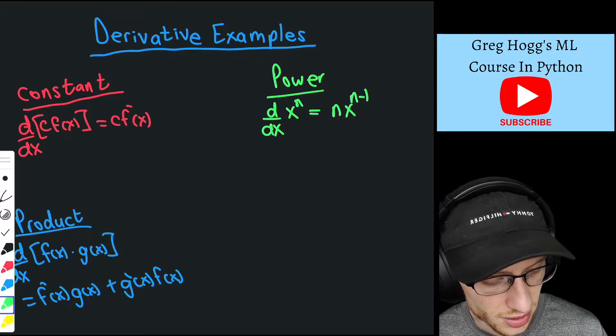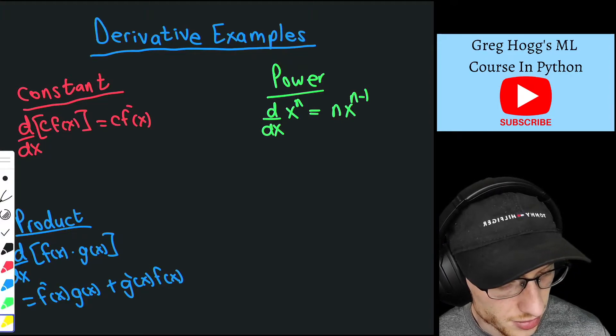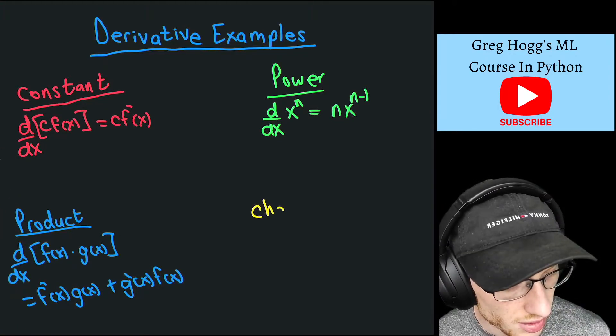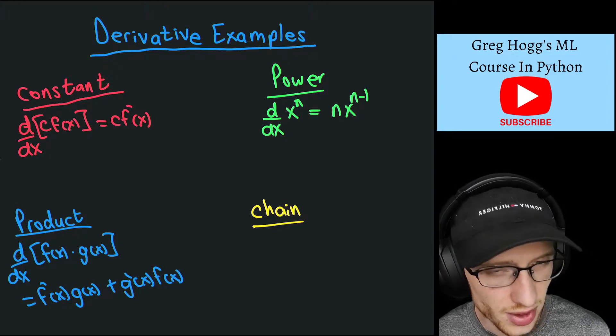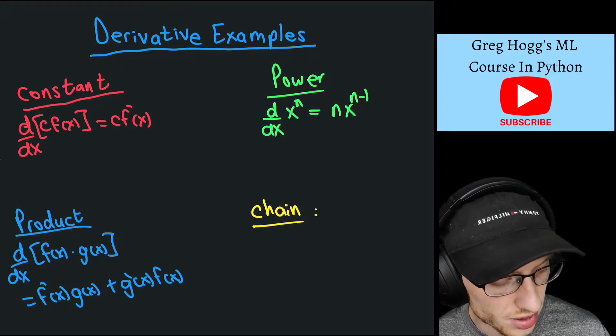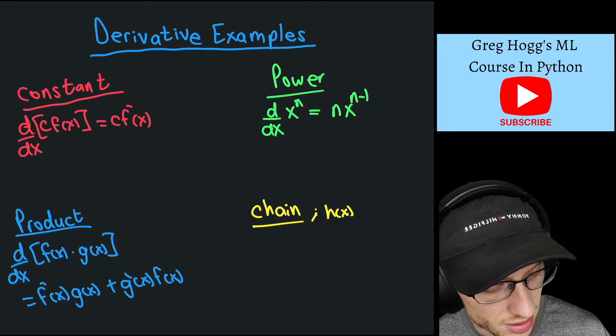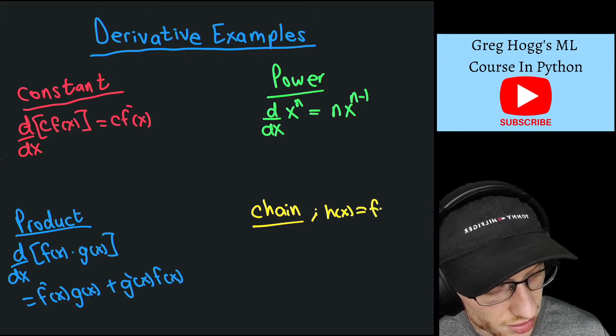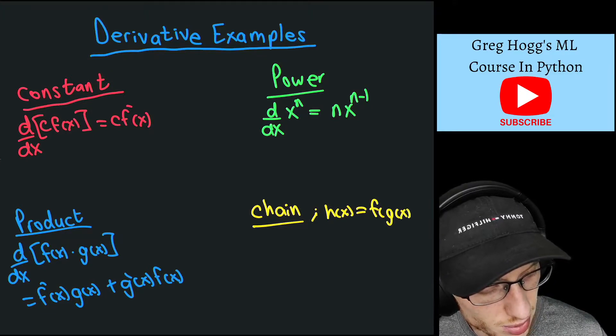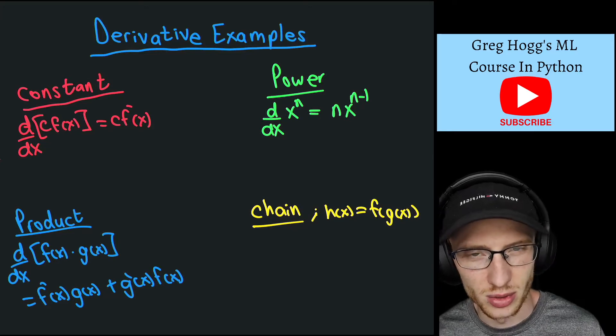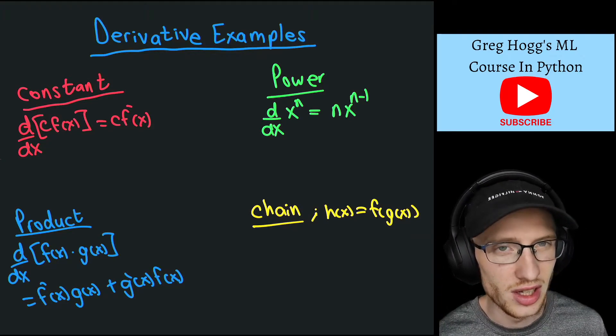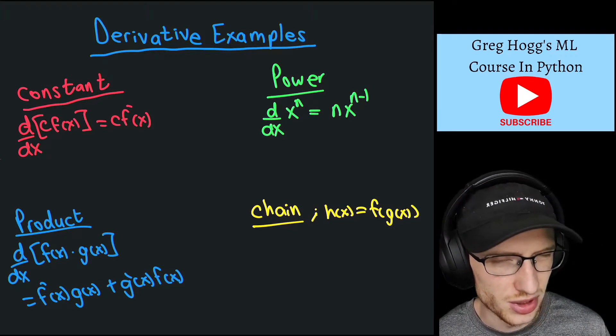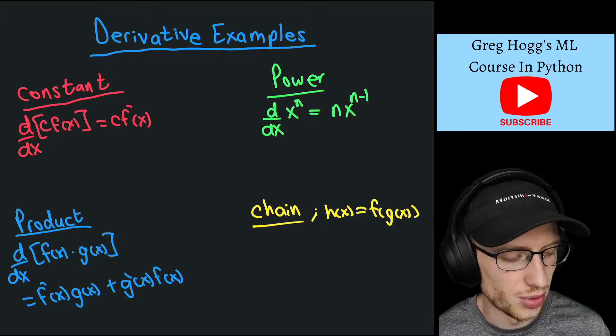And finally, we have the chain rule. So chain rule, it says that the derivative, if you have a function h(x), so we'll say h(x) is equal to f(g(x)), which means we have whatever f is, whatever g is, we put g into f, and we'll talk about that, it's kind of confusing, but I'll show you what I mean.